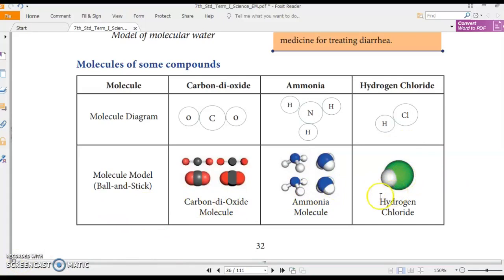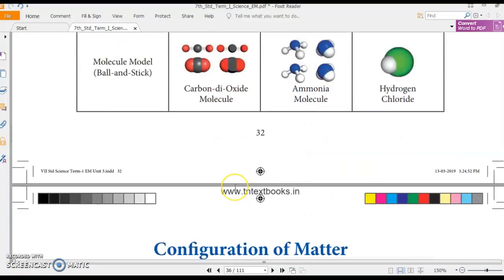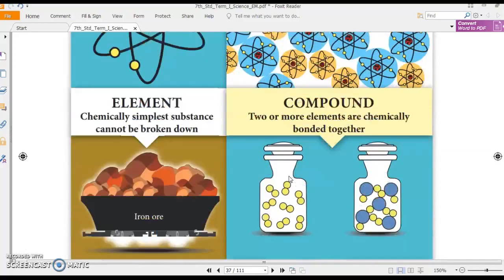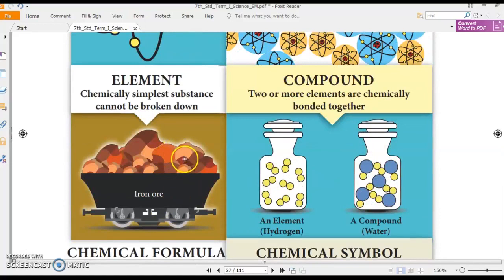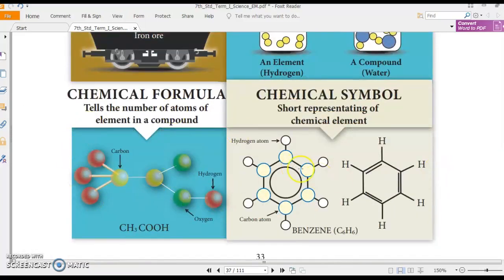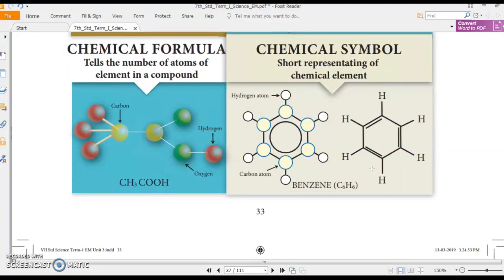Now, you know that atom is the smallest particle of an element. Two or more atoms combine together to form a molecule. Molecules are made up of atoms. Okay. Then, chemically simpler substance that cannot be broken is known as element. Two or more elements are chemically bonded together to form a compound. The chemical formula tells the number of atoms of elements in a compound while chemical symbols shows the short representation of chemical element. I am going to wind up our today's class with this topic.